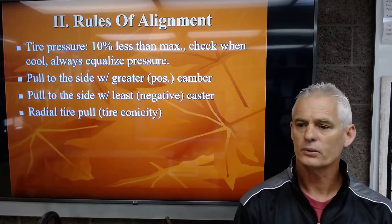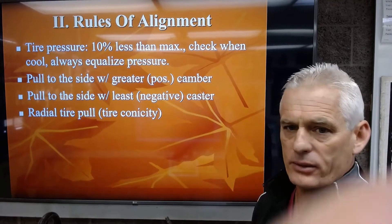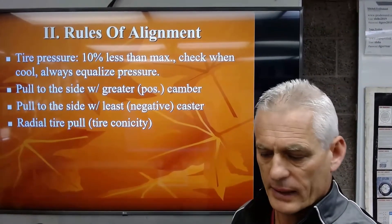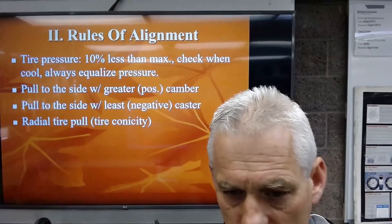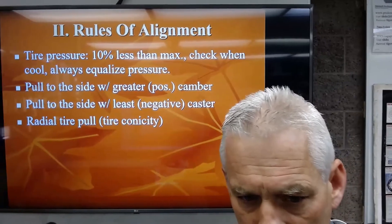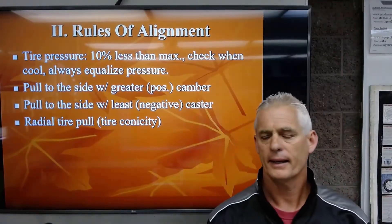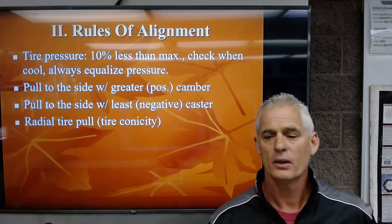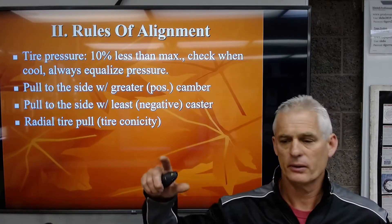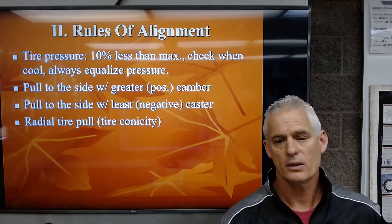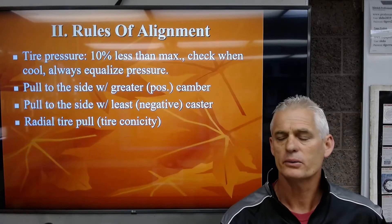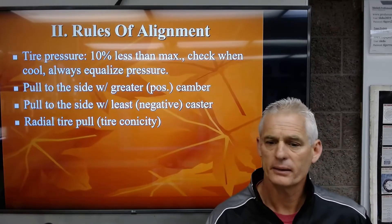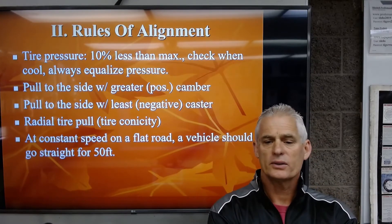A radial tire can cause a pull through tire conicity. Think of a Styrofoam cup lying on its side — it rolls in a circle because one side is smaller than the other. A shifted radial belt can create that cone shape and cause a significant pull. We always rotate the tires to diagnose or eliminate radial tire pull.